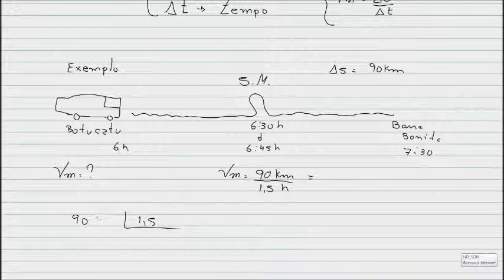90 dividido por 1,5. Quando eu tenho uma divisão com vírgula, eu igualo as casas, corto a vírgula e faço a divisão normalmente. 90 dividido por 15. Vamos ver. 15, 30, 45, 60, 75, 90. Dá 6. Isso aqui vai dar 0. Baixa esse 0. Não tem mais divisão. Dá 60.